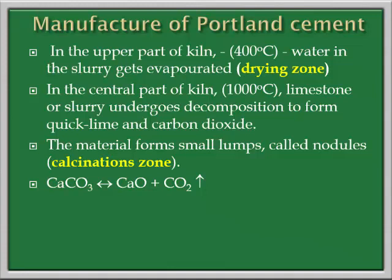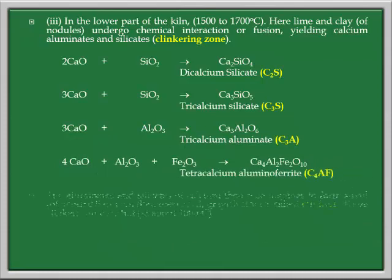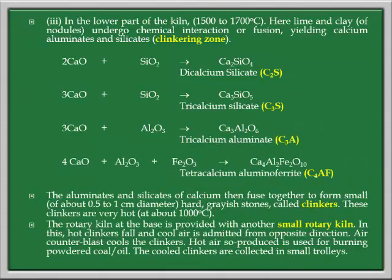The moisture in the slurry fed to the rotary kiln gets evaporated. In the central part of the kiln, the temperature is around 1000 degree Celsius and the limestone or slurry undergoes decomposition. This zone is also called the calcination zone. Here, the decomposition of calcium carbonate takes place and it produces calcium oxide and carbon dioxide. In the lower part of the kiln, the temperature is around 1500 to 1700 degree Celsius. This is the important part of the rotary kiln, also called the clinkering zone.